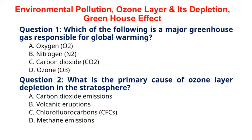Question 1. Which of the following is a major greenhouse gas responsible for global warming? A. Oxygen, O2. B. Nitrogen, N2. C. Carbon dioxide, CO2. D. Ozone, O3. The correct answer to question 1 is option C. Carbon dioxide, CO2. Explanation: carbon dioxide is a major greenhouse gas that traps heat in the Earth's atmosphere, contributing to global warming and climate change.